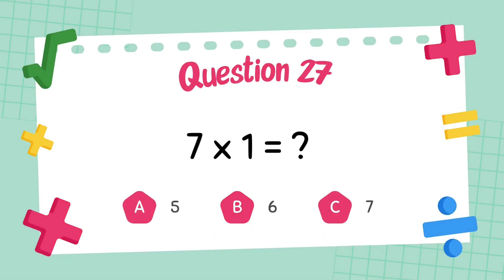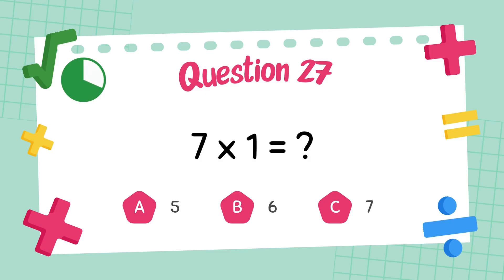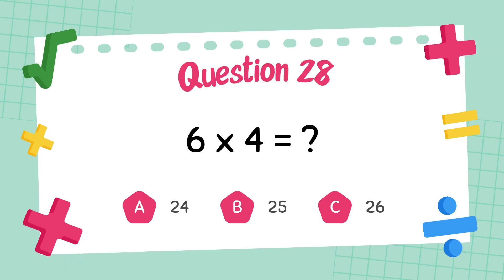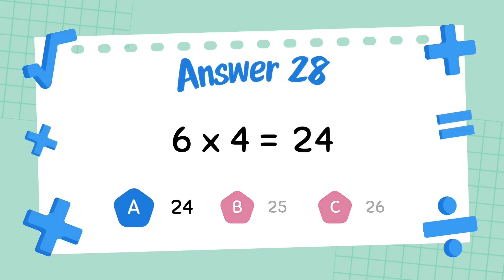What is 7 multiply 1? The answer is 7. What is 6 multiply 4? The answer is 24.